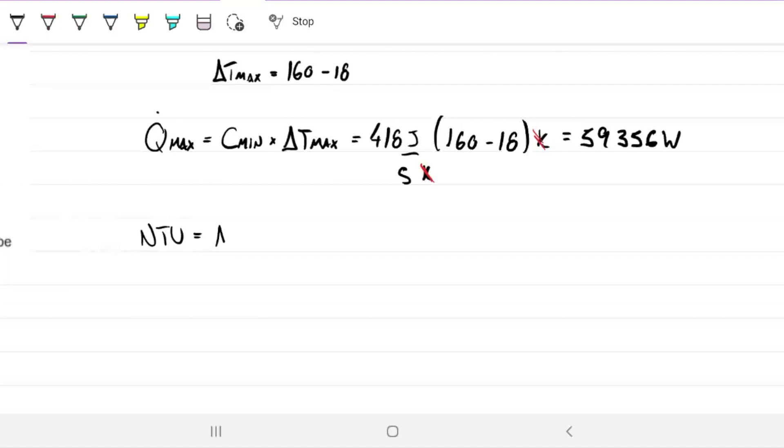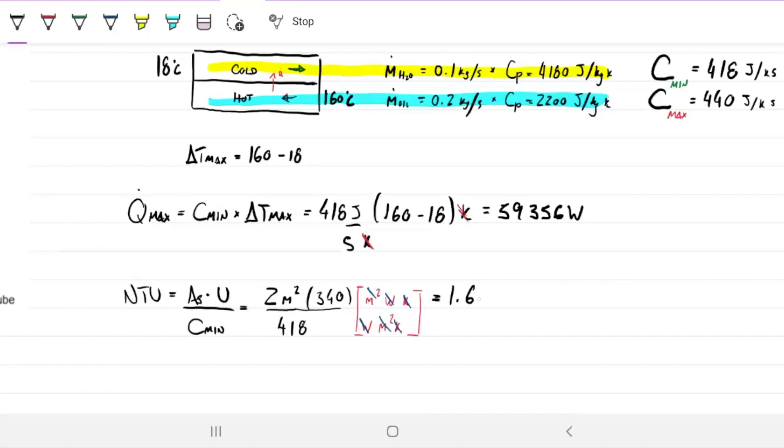Q max is pretty straightforward. That would be the C minimum times the maximum delta T. We have all that information already. C minimum is 418, and delta T max is 142.